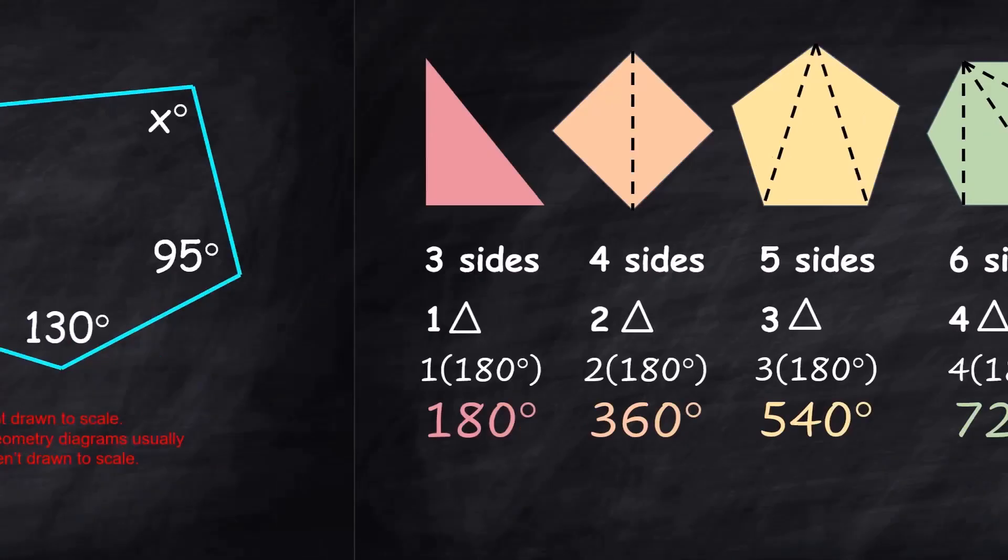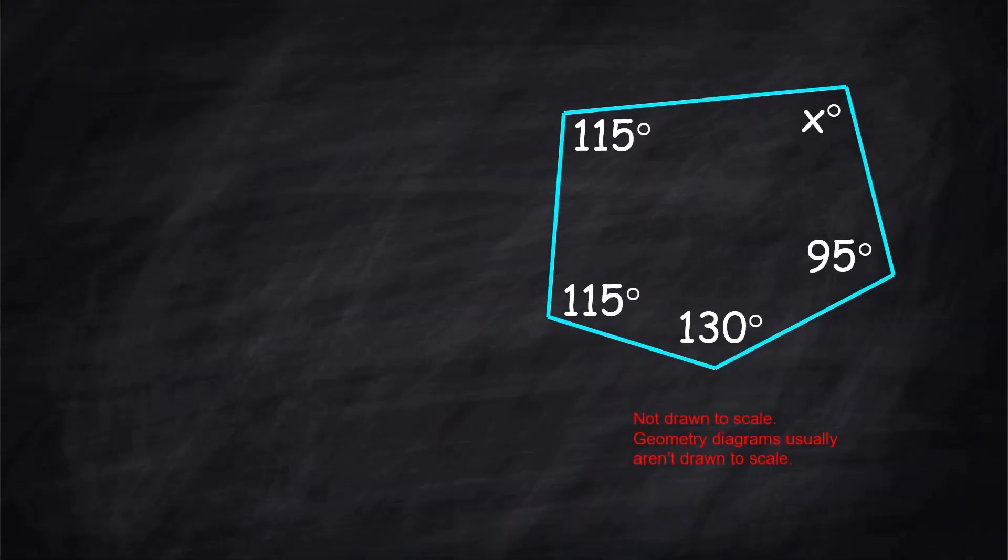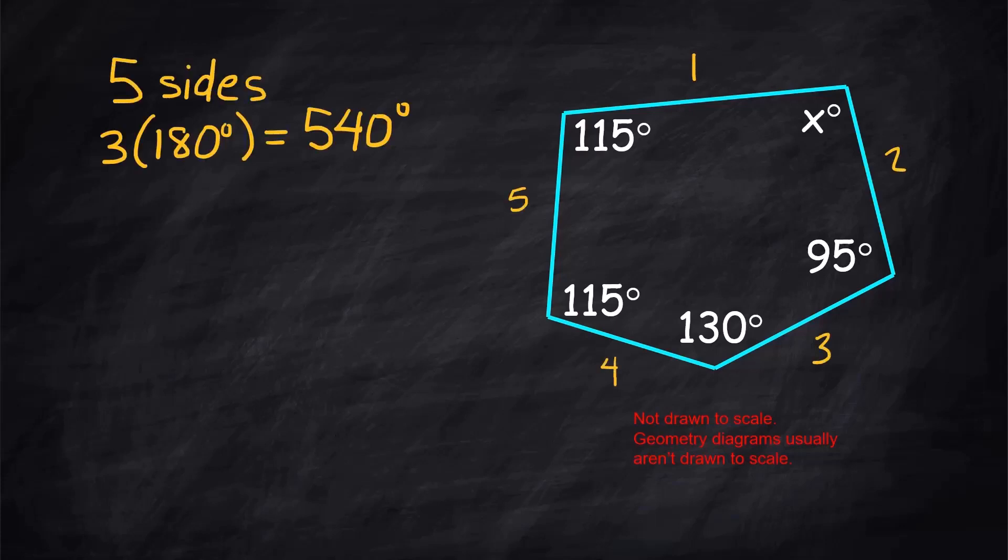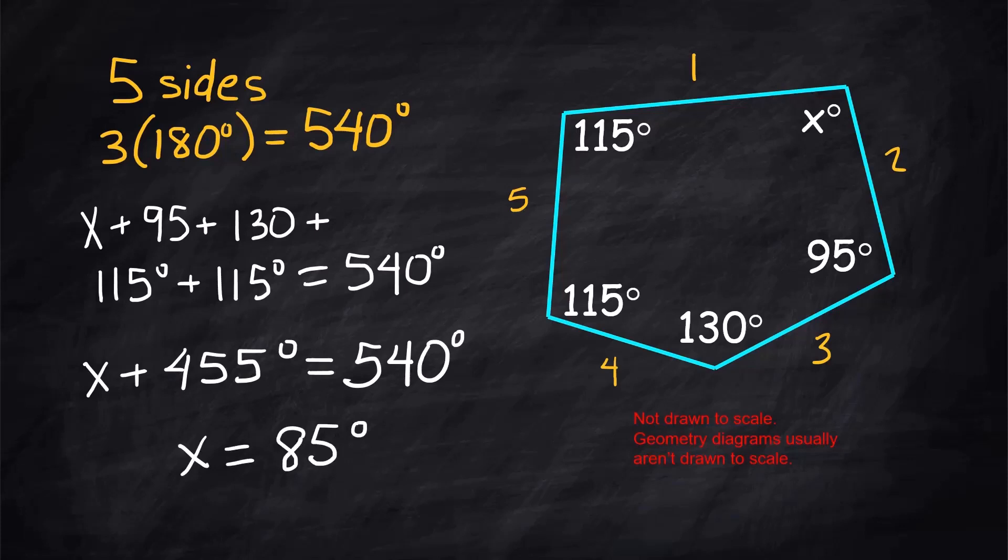Let's do a simple problem using this idea. Obviously it's not drawn to scale, geometry diagrams usually aren't ever drawn to scale, so don't get tripped up by that. We need to find that missing angle. Well it's just a matter of finding out what the angles are supposed to add up to. This thing has five sides, that means we know five sides would break up into three triangles, and that means the whole thing has to add up to 540 degrees. So if I just make a little equation where I add all the angles up except for the x, that equals 540, x plus 455 equals 540 degrees. Subtract 455 from both sides, what's left over is 85 degrees, and so that is what x must equal. That's a very basic type of problem.